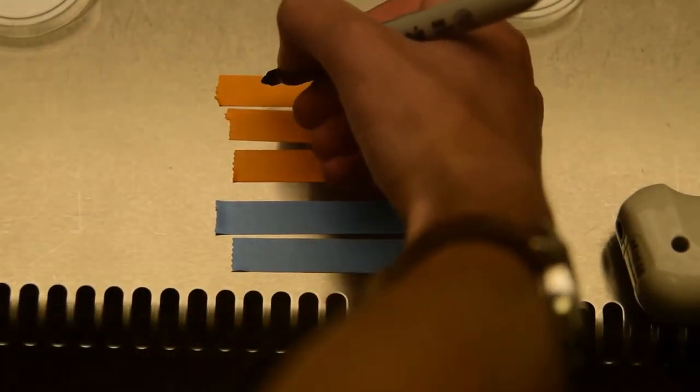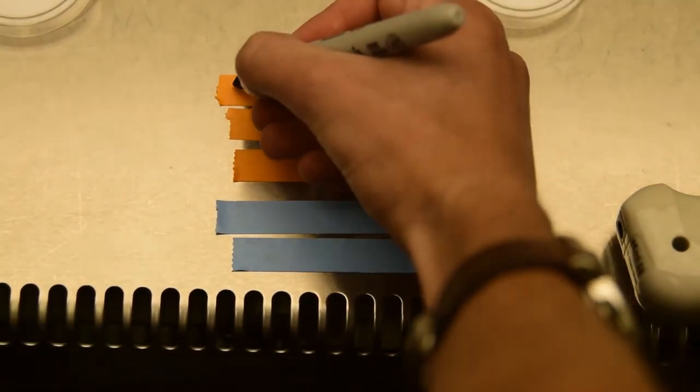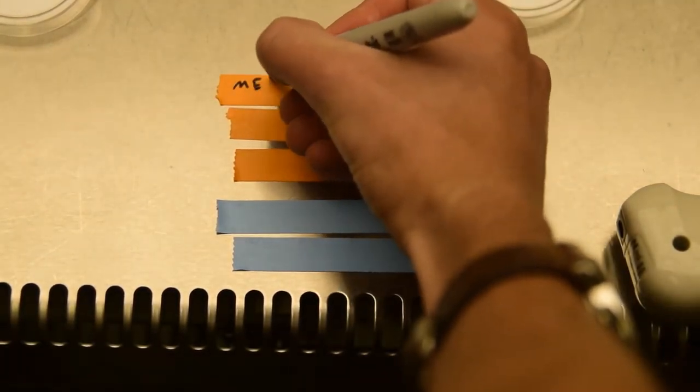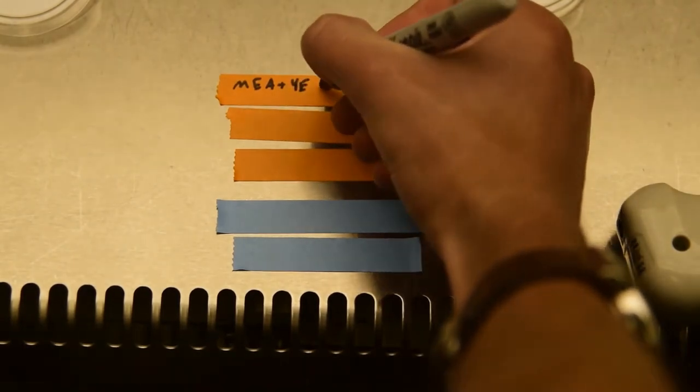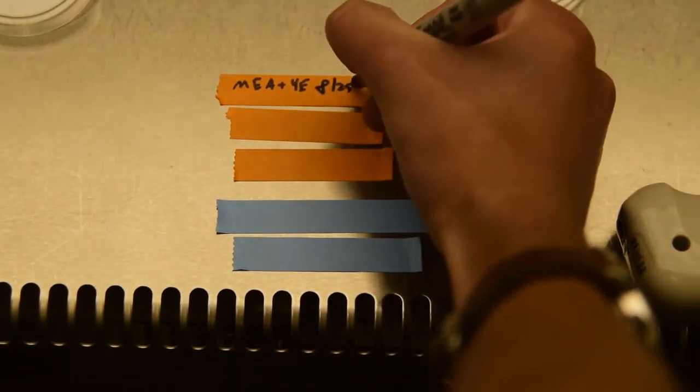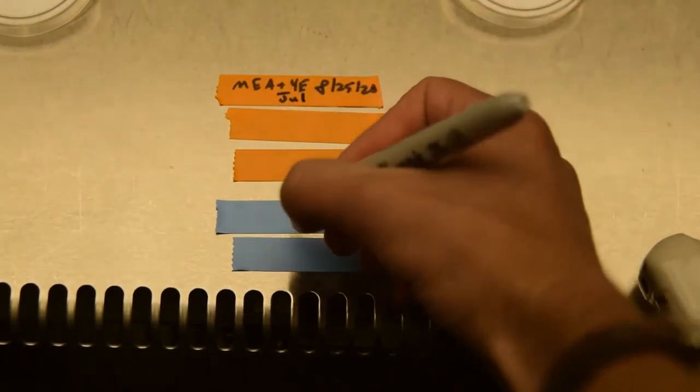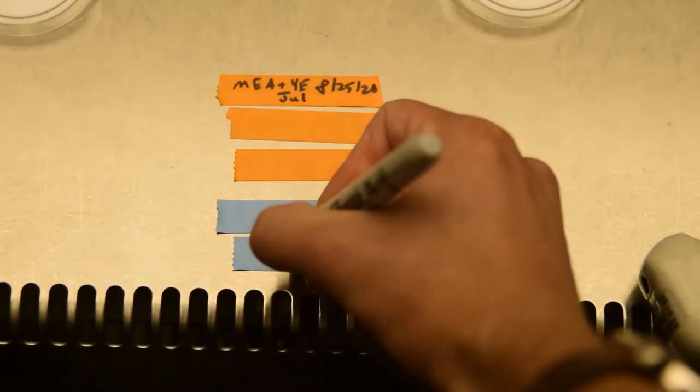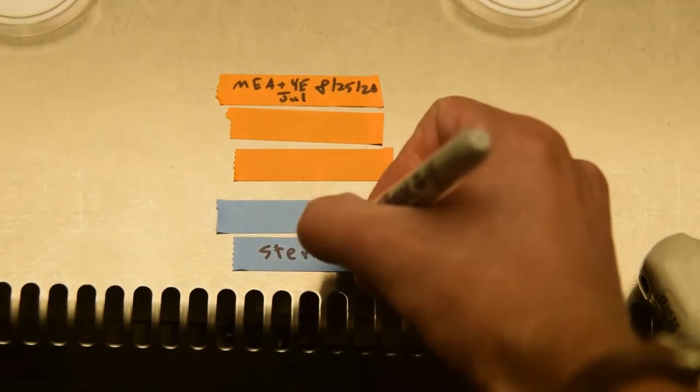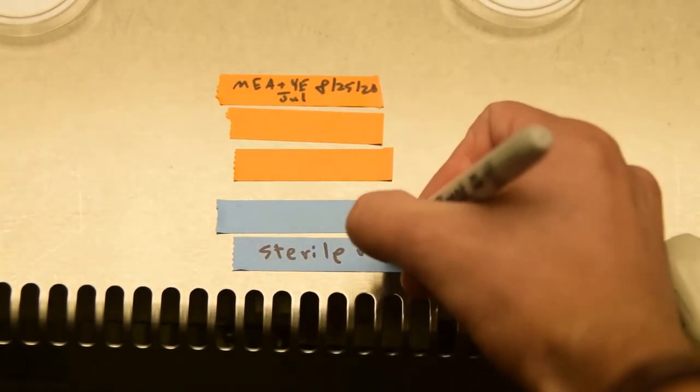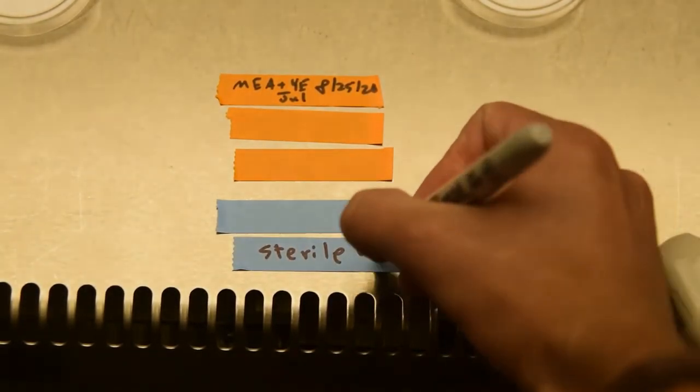Next, we want to make our labels for these. So this is tape where I folded over the end like I did previously. We're going to put the media type, the date that it was made, and who did it. And I used J-U-L as my sign. Additionally, for any plates that you did not use, you can put the sterile label, date, and name.